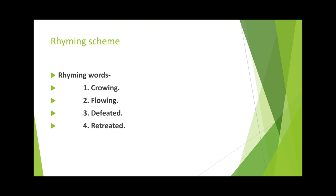So students, what is rhyming scheme? In order to get the answer to this question, first of all we have to know the rhyming words. Here I have mentioned a few words. They are: growing, flowing, defeated, and retreated. If you follow that, the first two words — growing and flowing — they sound similar and their ending is also similar.